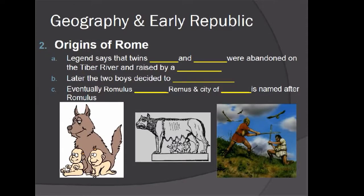The origins of Rome: legend says that twins Romulus and Remus were abandoned on the Tiber River and raised by a she-wolf. The book also mentions that Romulus and Remus were the sons of the Roman god Mars and a princess. Rome also had their mythological gods — Mars, Uranus, and several others, usually related to astrological objects like planets. According to myth, Mars left them abandoned near the Tiber River and a she-wolf raised them.